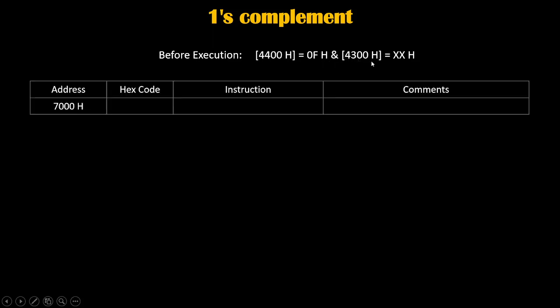So let's write our program. We will write our program starting from address 7000h, so 7000h is our starting address. At 7000h we will write the instruction LDA 4400h. LDA stands for load accumulator, so this instruction will load the accumulator from memory address 4400h — whichever value is there at 4400h will get loaded inside the accumulator.